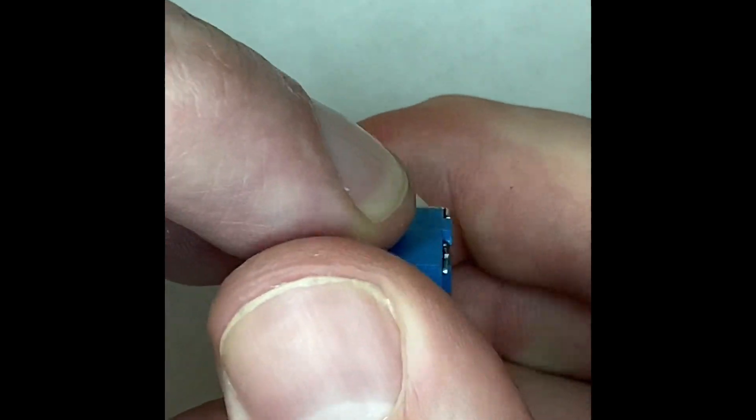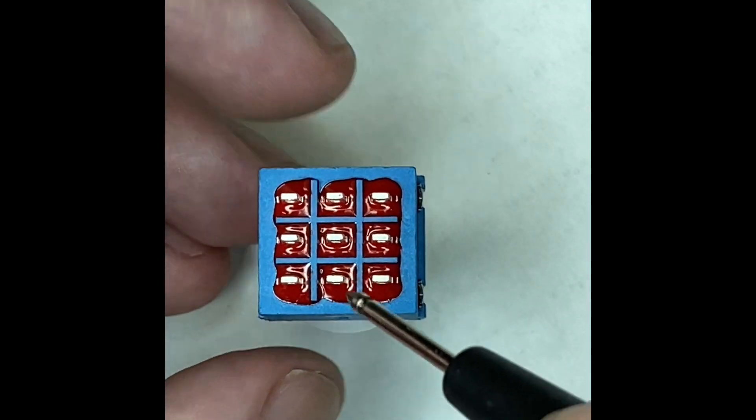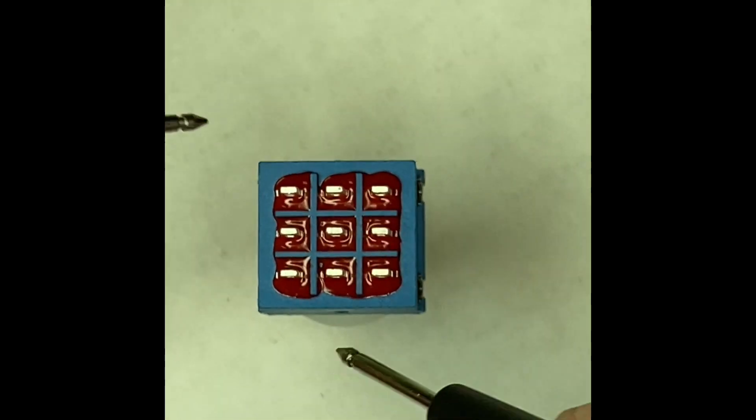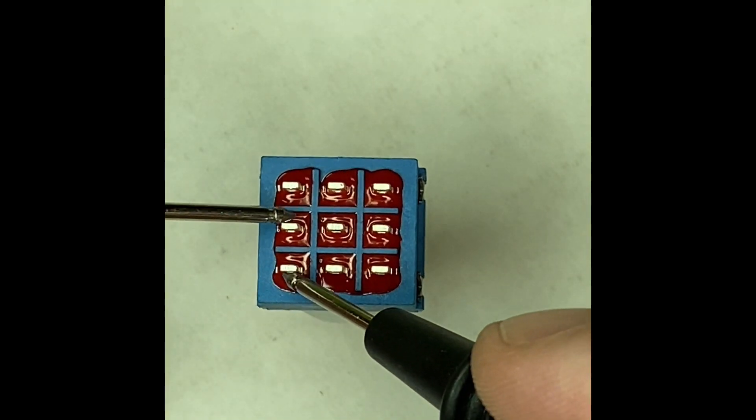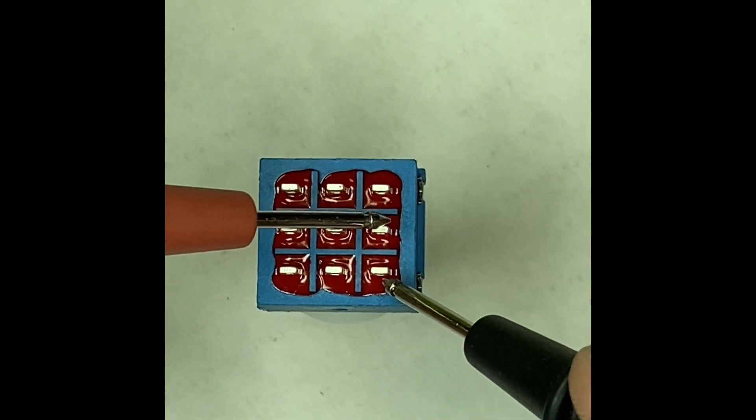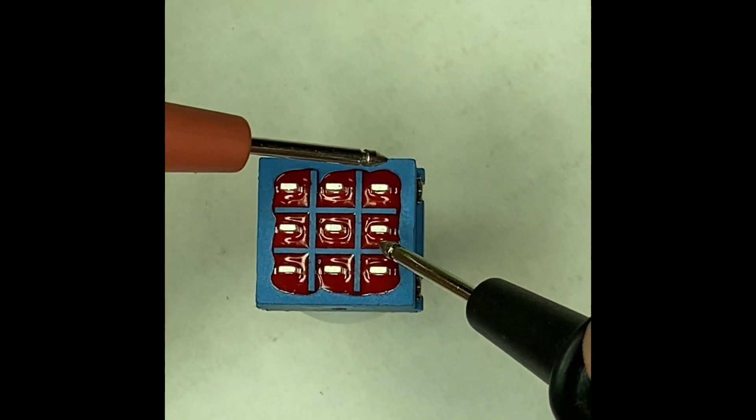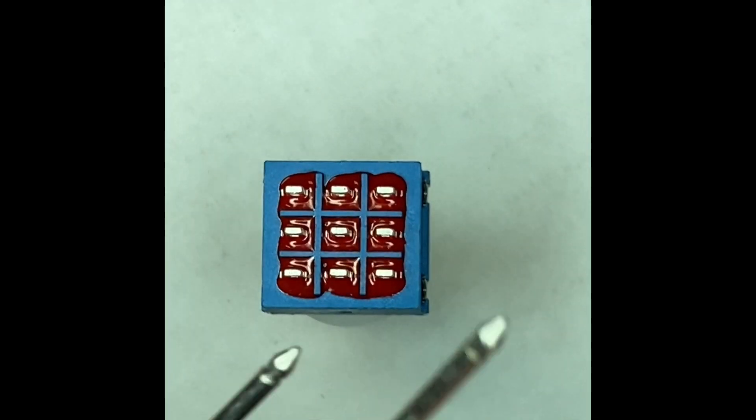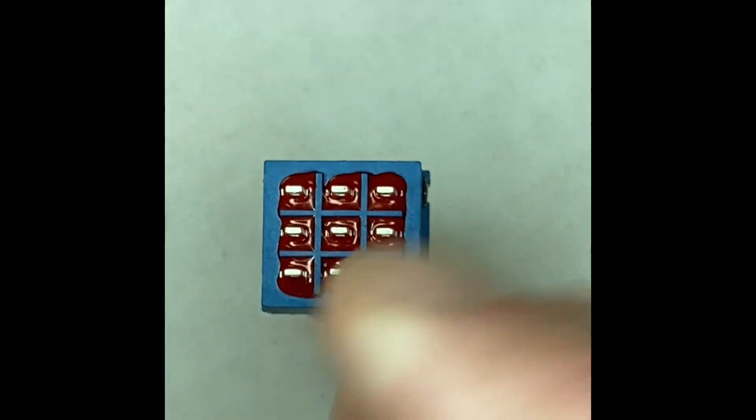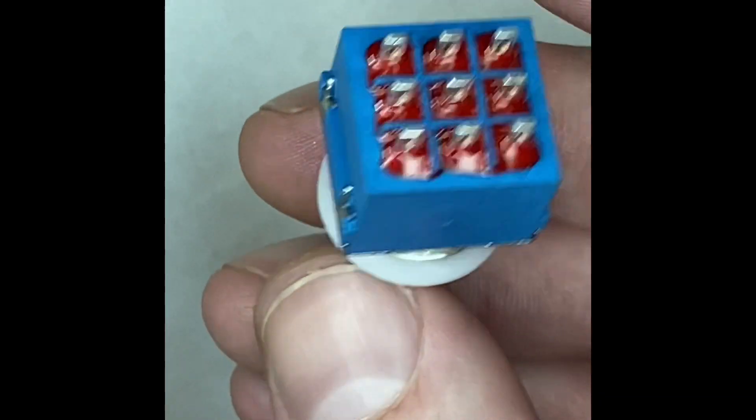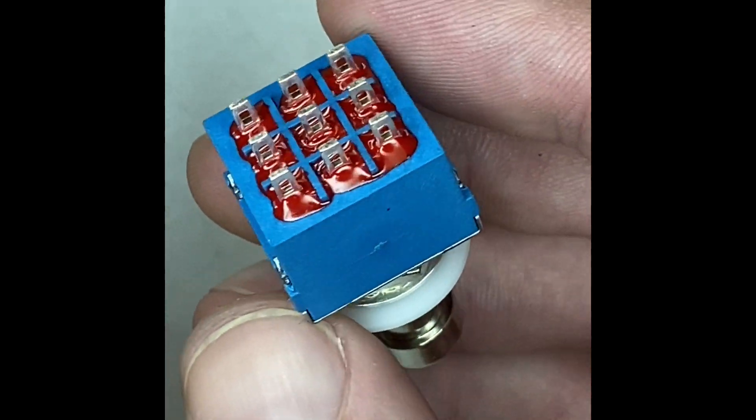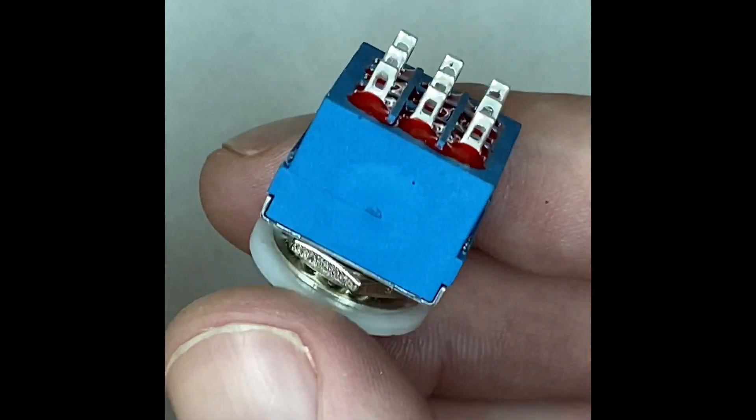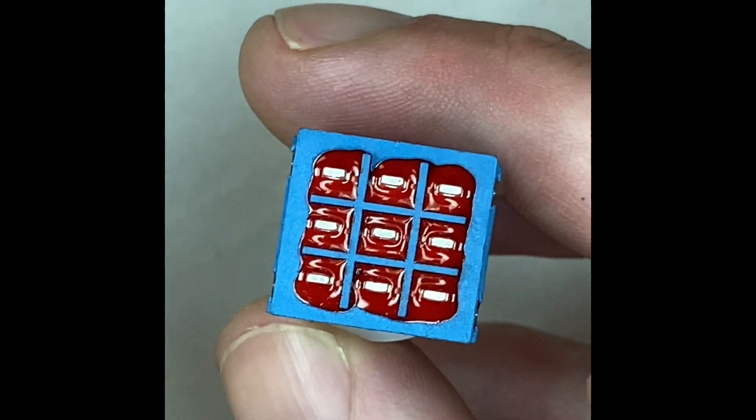Now if we press the switch, these poles should be connected to their respective throws in this direction. So we should have continuity here, here, here, and here, but not here, here, here. And so that's how you do a continuity test on your footswitch. So if we're helping you with tech support and we ask you to get your multimeter out and test for continuity on your footswitch, that's how you do that.